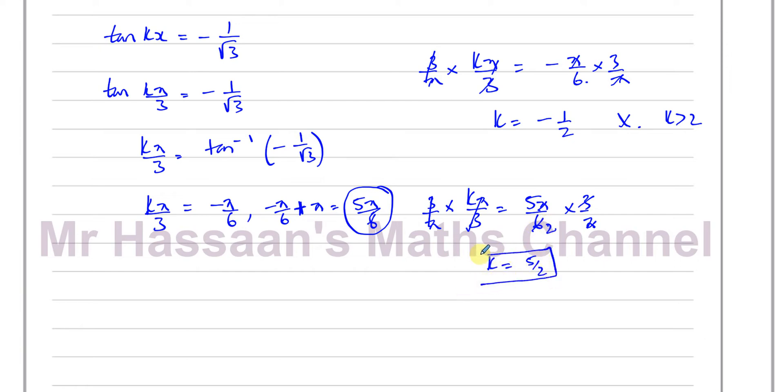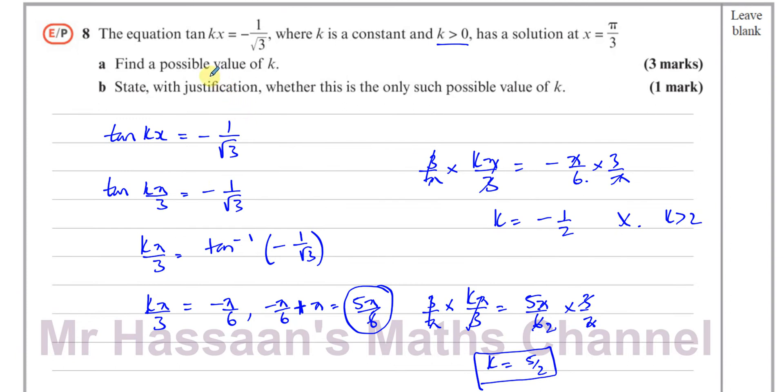There's the answer to part a, 5 over 2, 2.5, same thing. So there's the answer to part a for this question, find a possible value of k.